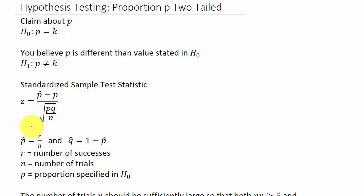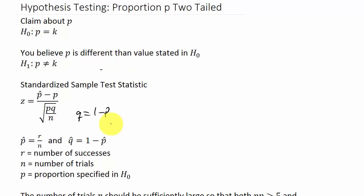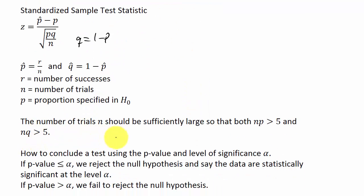Our alternate hypothesis H-sub-1 is P is not equal to K — we just believe P is different from the value stated in the null. The sample test statistic Z is P-hat minus P, over the square root of P times Q over N, where P-hat is R over N, Q-hat is 1 minus P-hat, and Q in the formula is 1 minus P. R is the number of successes, N is the number of trials, and P is the proportion specified in H-naught. N should be large enough that both N×P and N×Q are greater than 5.